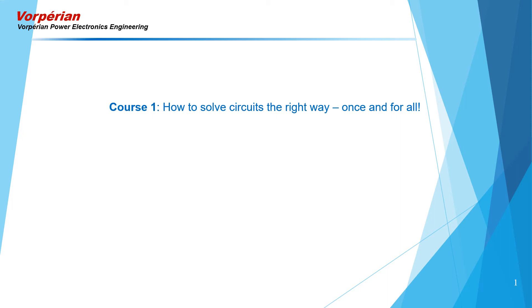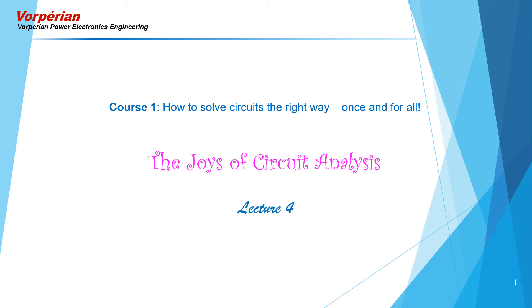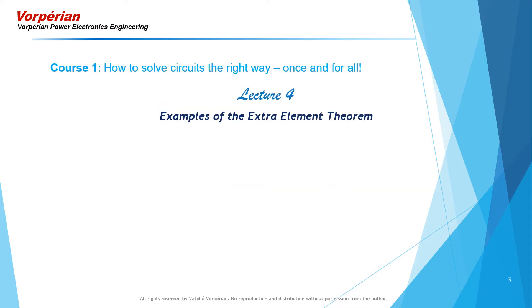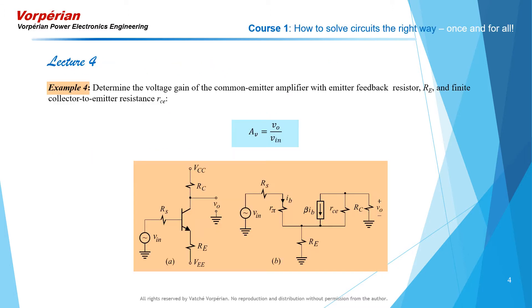How to solve circuits the right way — the joys of circuit analysis. In lecture four we continue to work out examples of the extra element theorem. These examples can be found in my book 'Fast Analytical Techniques in Electrical and Electronic Circuits,' published by Cambridge University Press. In this example I'm going to work out the voltage gain of a common emitter amplifier with an emitter resistor, or emitter feedback.